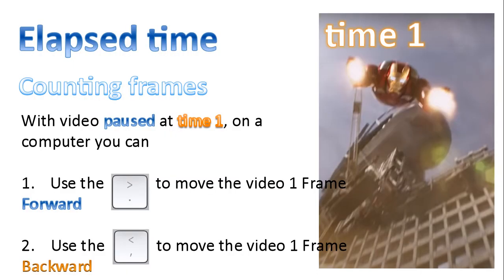With the video paused at time one, on a computer, you can use the period key to move the video one frame forward, or you can use the comma key to move the video one frame backward. Those two keys move a video back and forth one frame at a time when you're watching a video in YouTube, and the video is paused. So I'm going to show you this now.